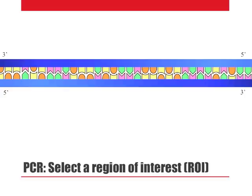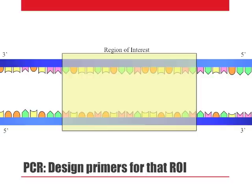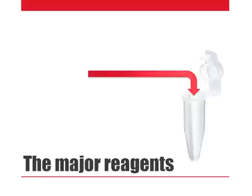Before initiating the PCR reaction, a scientist must first select a region of interest in the genome. This region may be a gene or a portion of a gene. Still prior to reaction initiation, the scientist must design primers that will allow him to selectively replicate that region. For this specific region, a scientist might design primers that look like this.